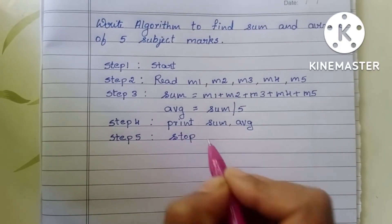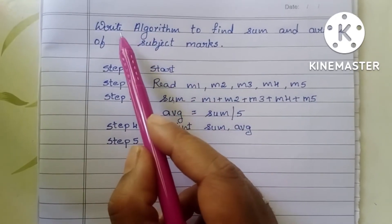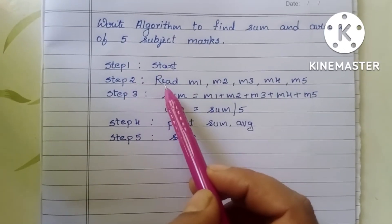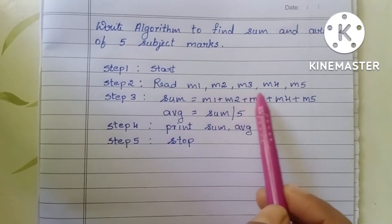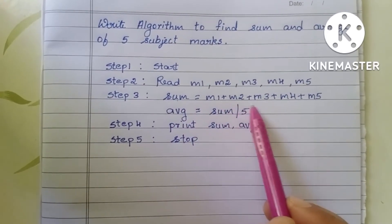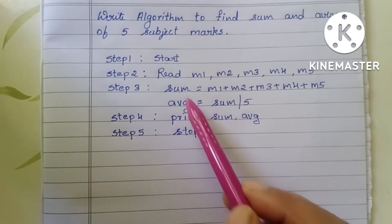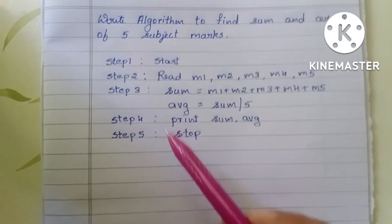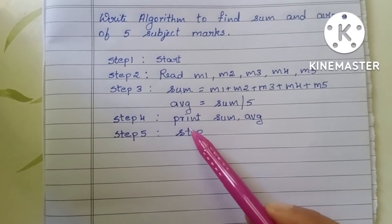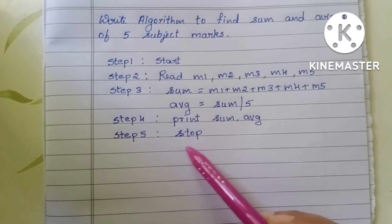Let's review the complete algorithm to find sum and average of five subject marks. Step one: start. Step two: read m1, m2, m3, m4, and m5. Step three: calculate sum = m1 + m2 + m3 + m4 + m5, then find average = sum divided by five. Step four: print sum and average. Step five: stop.